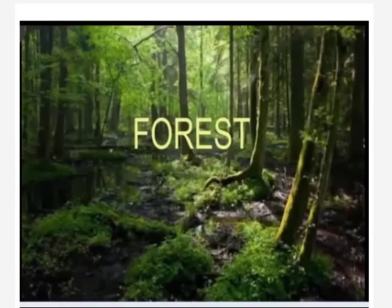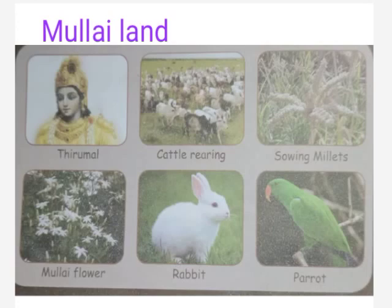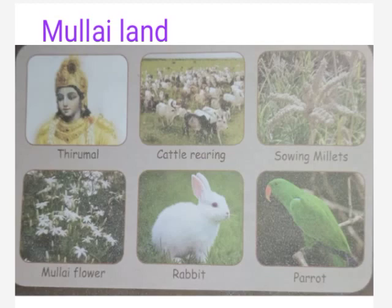Next, we learn about the forest — Mullai land. The god is called Thirumal. Occupations: cattle rearing and gathering fruits. Flower: Mullai flower. Animal — rabbit; bird — parrot. Musical instrument of Mullai land. The people and their occupations: Idayar — milk seller; Aayar — cattle rearer. The soil of Mullai land is red soil with stones and pebbles.